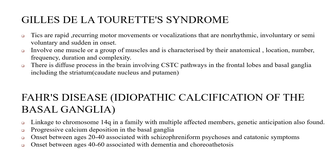Gilles de la Tourette syndrome: tics are rapid, recurring motor movements or vocalizations that are non-rhythmic, involuntary or semi-voluntary, and sudden in onset. They involve one muscle or a group of muscles and are characterized by anatomical location, number, frequency, duration, and complexity. There is a diffuse process in the brain involving CSTC pathways in the frontal lobe and basal ganglia including the striatum. Fahr's disease is idiopathic calcification of the basal ganglia, linked to chromosome 14q, with genetic anticipation in affected families. Progressive calcium deposition in the basal ganglia with onset between 20–40 years is associated with schizophreniform psychosis and catatonic symptoms, while onset between 40–60 years is associated with dementia and choreoathetosis.